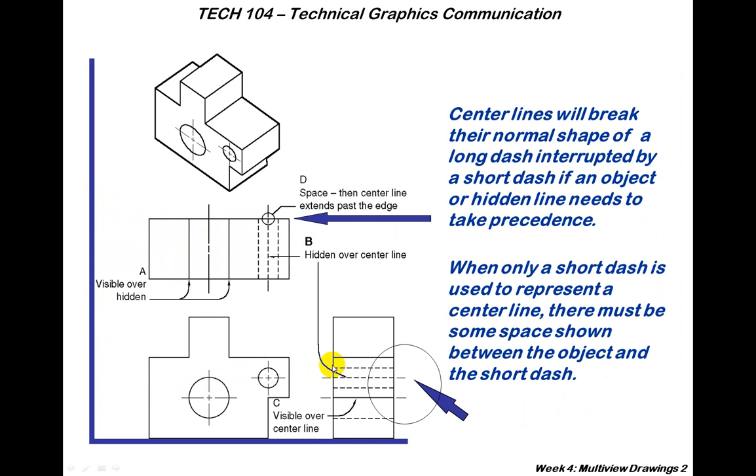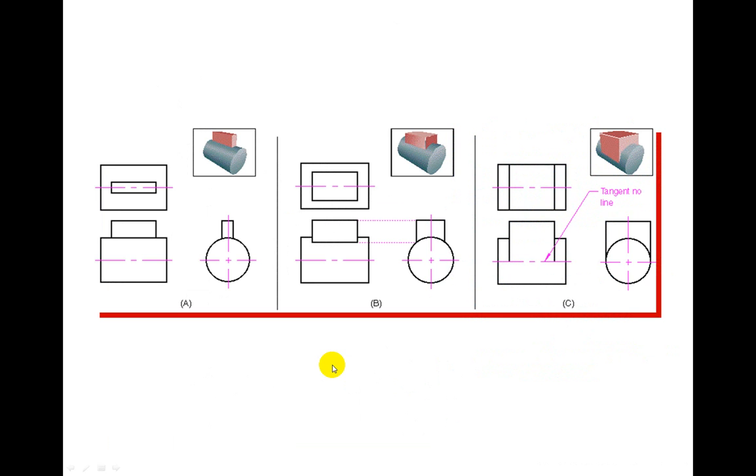So center lines will break their normal shape of a long dash interrupted by a short dash if an object or hidden line needs to take precedence. When only a short dash is used to represent a center line, there must be some space shown between the object and the short dash. Here's some examples of center lines. Anytime you have a circle, you need to draw that it is a circular shape with a center line. Even though there's not a hole through it, it's still in a circular shape, so there's a center line.